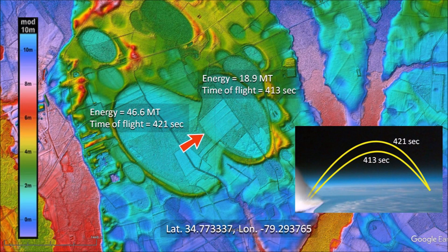The kinetic energy for the creation of the small basin was equivalent to 18.9 megatons of TNT, and the impact that made the larger basin had the kinetic energy equivalent to 46.6 megatons of TNT. These were truly colossal impacts. Neither animals nor humans could have survived the barrage of impacts that made this landscape.